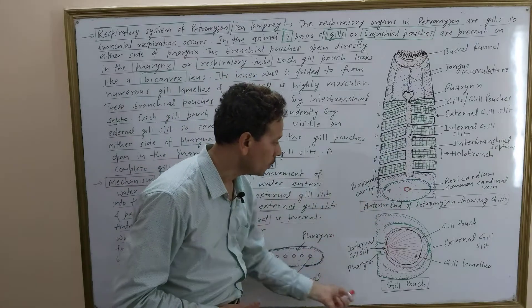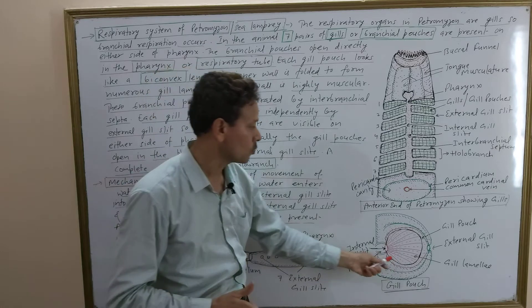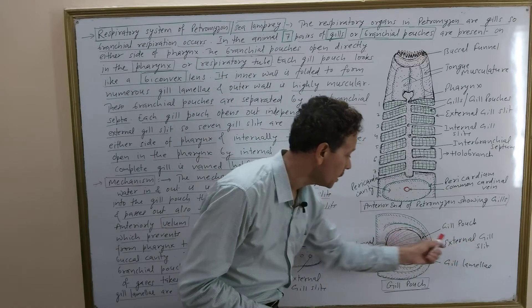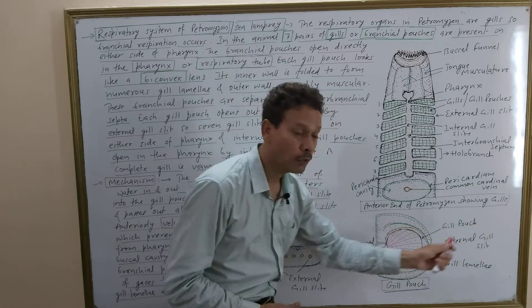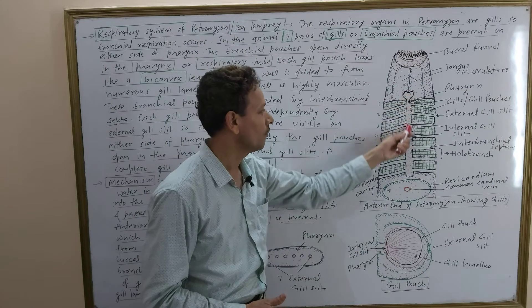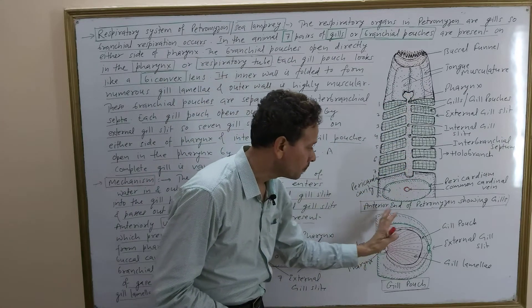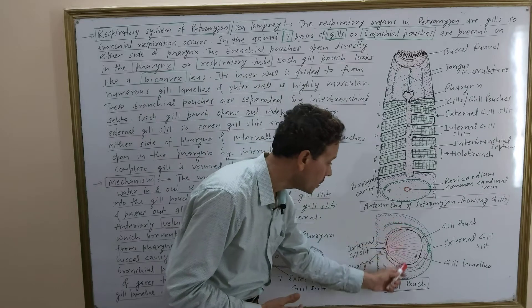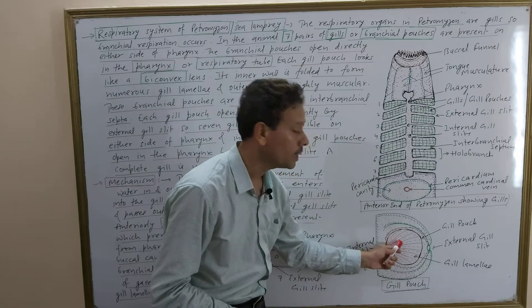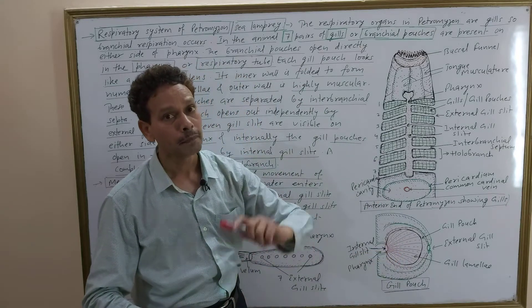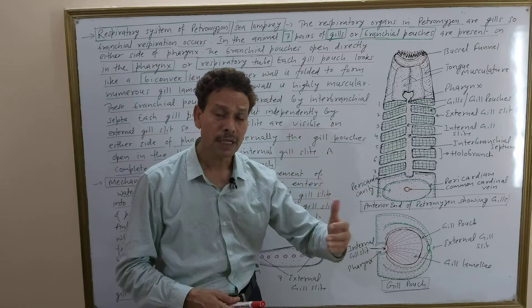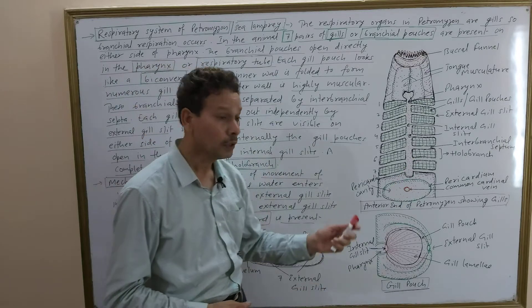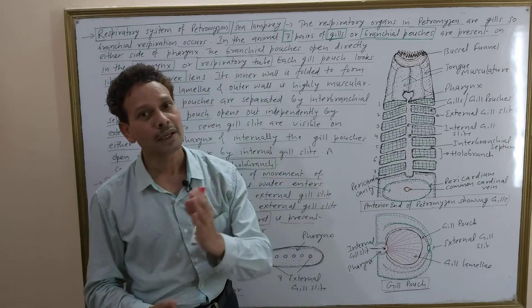Let's look at the structure of one gill. One gill pouch — the structure is biconvex. Its two apertures or openings are external gill slits on the outside, and internal gill slits opening into the pharynx, the respiratory tube. The inner wall of the gill pouch has numerous membranous folds — these are gill lamellae. These membranous folds, or gill lamellae, are highly vascular, meaning enriched blood supply, and the gill lamellae are meant for exchange of gases.